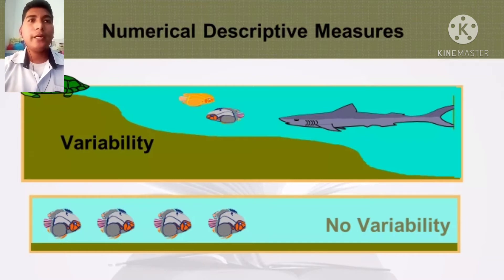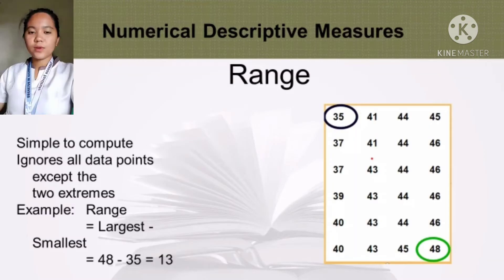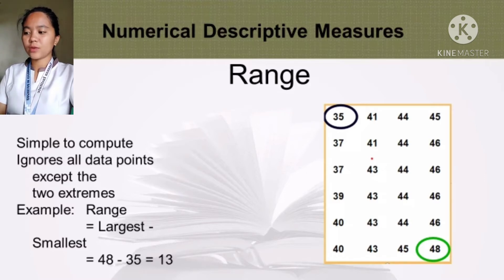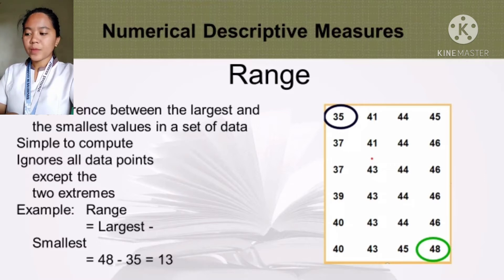There are four main ways to describe variability in a data set: range, interquartile range, variance, and standard deviation. Range is the difference between the largest and the smallest values in the set of data. It is simple to compute but ignores all data points except the two extremes. Example: the largest value is 48 and the smallest is 35, so 48 minus 35 equals 13.